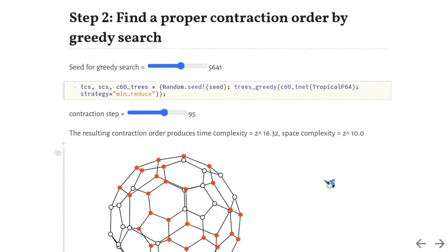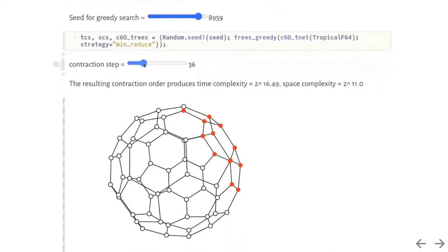naively iterating over the spin configurations gives the complexity of 2 to the 60. The naive contraction of a tensor network gives the same complexity. The key point is, the tensor network is usually contracted step by step, rather than as a whole. The contraction order forms a tree, and this tree decides the space and time complexity of the algorithm. Here, we use the greedy algorithm to find a proper contraction tree. If we change the seed, we can see the time complexity and space complexity also varies.